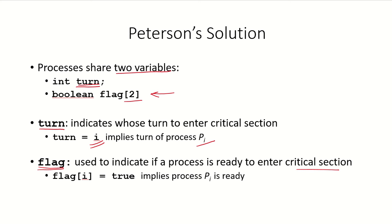If process PI wishes to enter the critical section, it assigns a value of true to flag[i]. So if flag[i] is true, process PI is ready and wishes to enter the critical section. Similarly, if flag[j] is true, process PJ is ready to enter. If the values are false, that means the process does not want to enter the critical section.